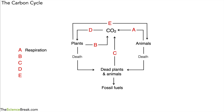Part A is respiration — that's animals putting carbon dioxide into the atmosphere. Part B is plants putting carbon dioxide into the atmosphere as well, so that's also respiration. Part C is coming off from dead animals and plants, so that's the decomposers carrying out respiration. Part D is carbon dioxide going into plants — that was photosynthesis. And finally part E is plants going into animals, which is when the animals eat the plants, so we can call that feeding, consuming, or eating.